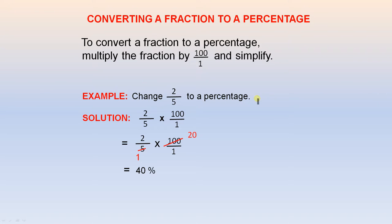Change 2 over 5 to a percentage. You take 2 over 5 and multiply it by 100 over 1. Here is the working: 5 divided by 5 goes once, 5 into 100 goes 20, and 2 times 20 gives you 40. The answer is 40%.